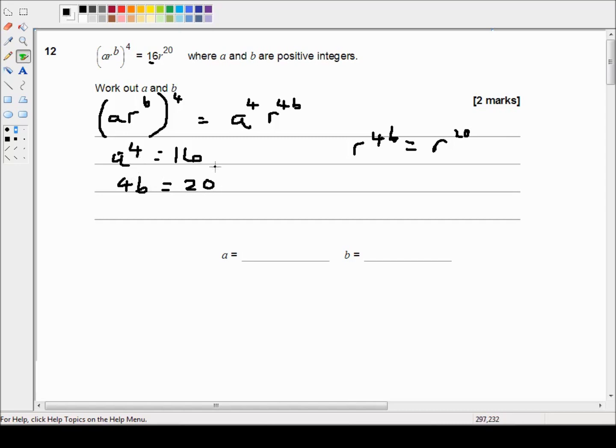So if a^4 is equal to 16 then a equals 2, which I happen to know because 2 times 2 is 4 and 4 times 2 is 8 and 8 times 2 is 16. And 4b is 20 so b is equal to 20 divided by 4, which is equal to 5.